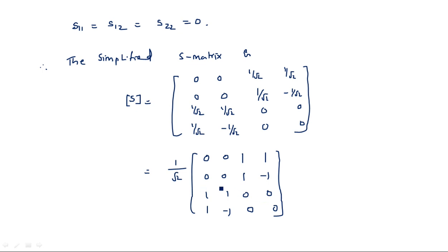This is the way to calculate the S-matrix of Magic T. We have included the properties of the S-matrix and the H-plane and E-plane T-junction properties to consolidate the Magic T S-matrix parameters. In the next video, I will explain example cases of this Magic T junction. Thank you.